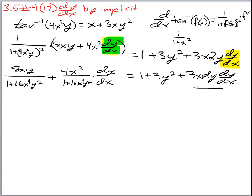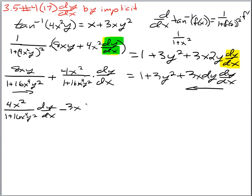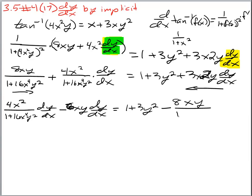Let's bring this piece over to the right, so we've got 4x squared over 1 plus 16x to the fourth y squared, times dy/dx, minus — sorry, that should be a 2y — so this ends up becoming 6xy dy/dx. And that equals 1 plus 3y squared minus the fractional piece we moved over: 8xy over 1 plus 16x to the fourth y squared.